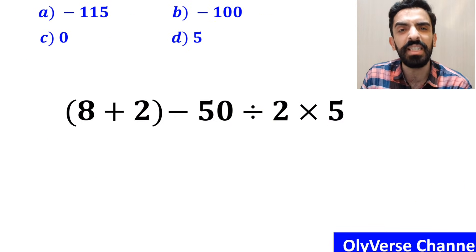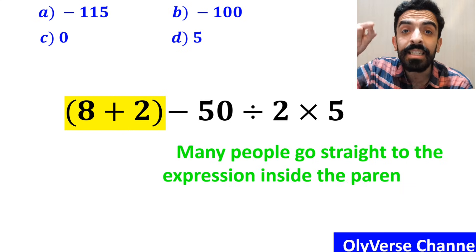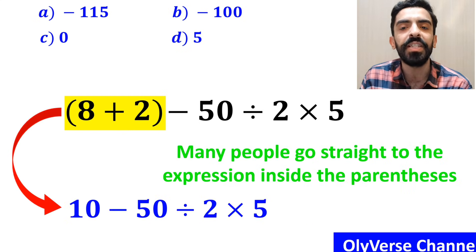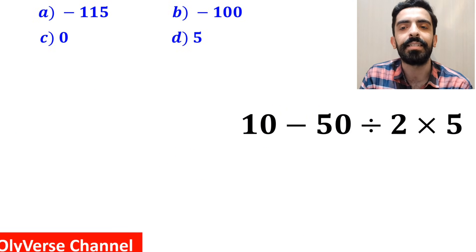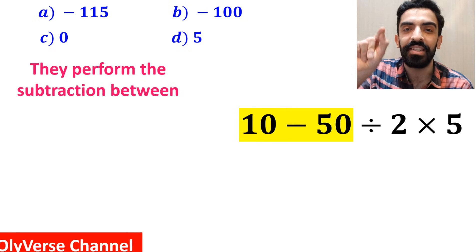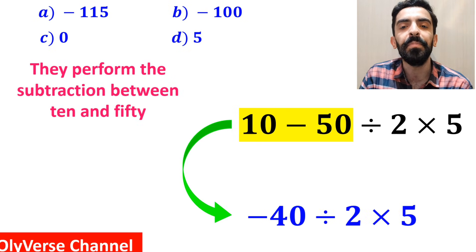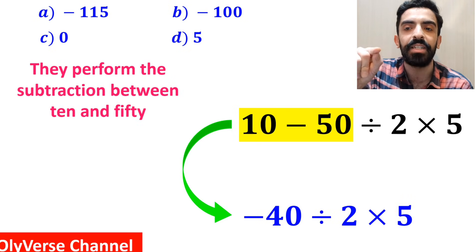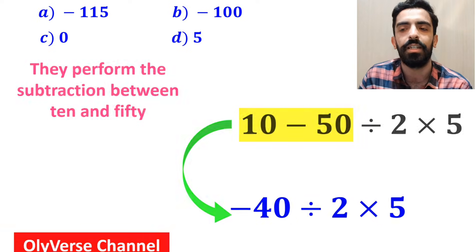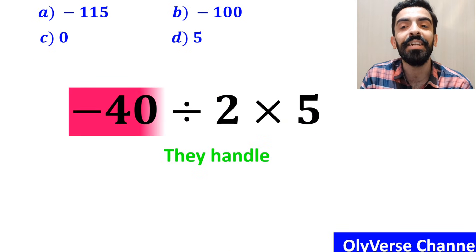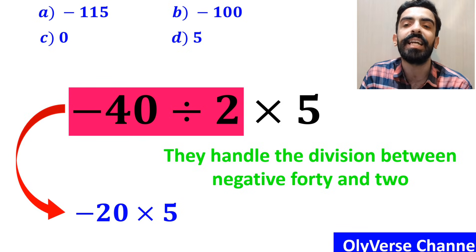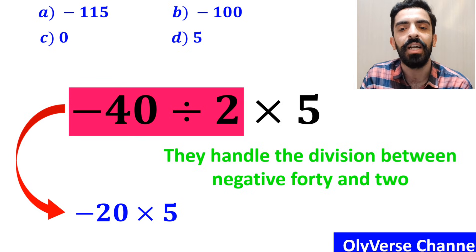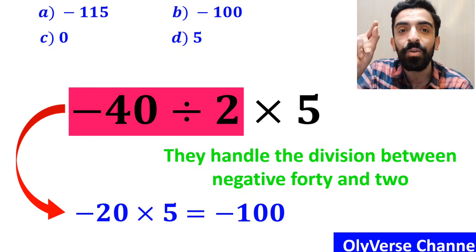In the first step of solving this question, many people go straight to the expression inside the parentheses and simplify the whole expression to 10 minus 50 divided by 2 multiplied by 5. In the next step, they perform the subtraction between 10 and 50 and simplify this expression to negative 40 divided by 2 times 5. In the final step, they handle the division between negative 40 and 2 and write this expression as negative 20 multiplied by 5, which eventually gives them the answer negative 100.